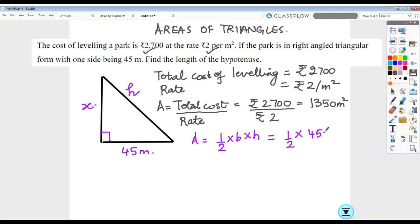So this half, the base can be taken as 45 and height as x. So let us solve: area equals 1350 equals half into 45 into x. When we try and work this out, x comes out to be 1350 into 2 by 45. Let's try and work this out.